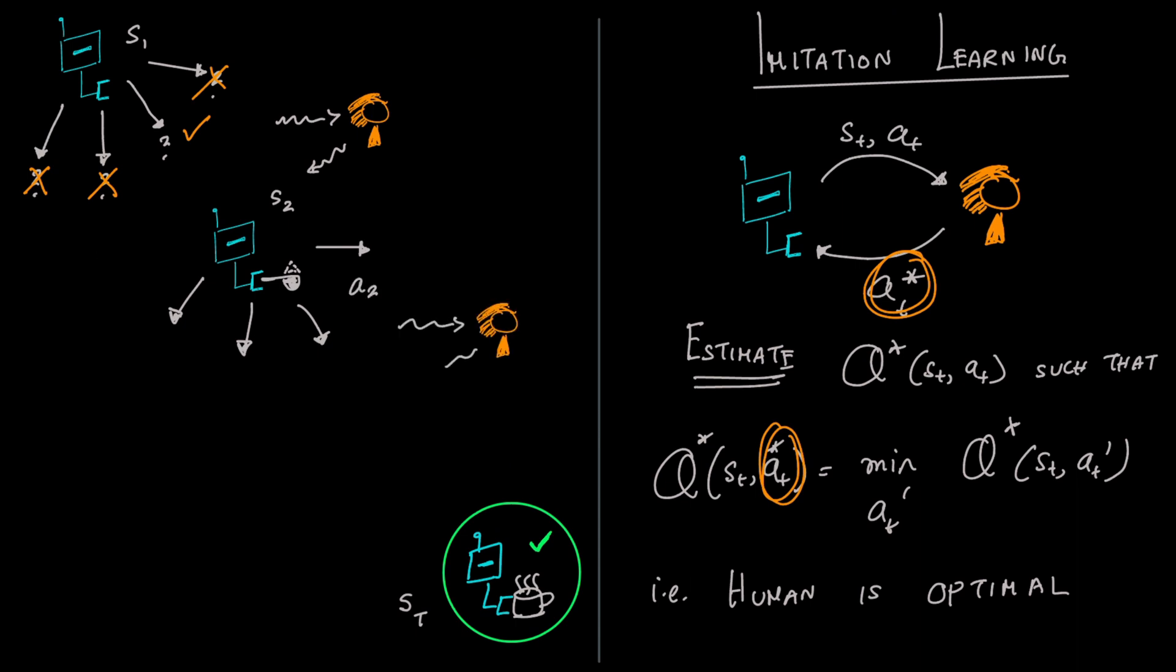Eventually, the human not only guides the robot to the goal, but tells it what roads not to go down. This is why IL can be exponentially more sample efficient than RL.